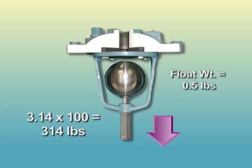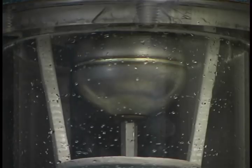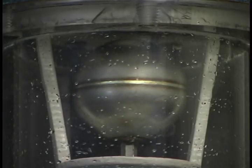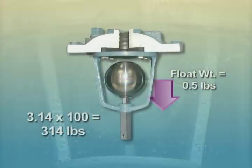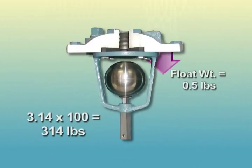An important benefit of an air vacuum valve is its ability to provide pipeline vacuum protection. If a system failure or column separation occurs and a negative pressure develops, the valve will open, admitting air into the line and preventing vacuum conditions, which can lead to a possible pipeline collapse or intensified air-related surge. While air vacuum valves will exhaust large quantities of air upon startup, it should be remembered that they will not continuously release air during system operation.